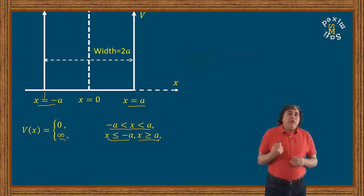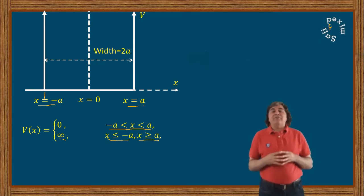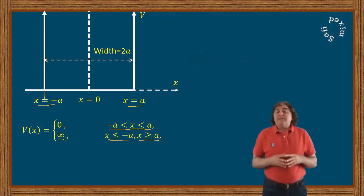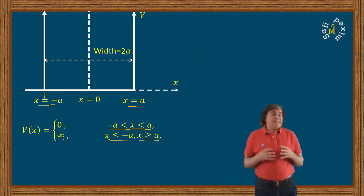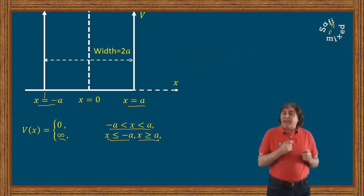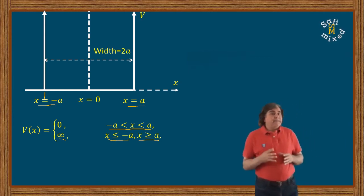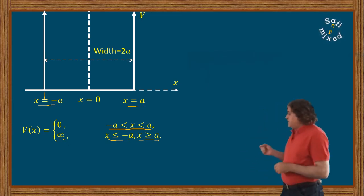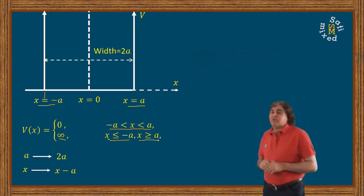One way to obtain the wave function for this potential is to solve the Schrödinger wave equation, exactly as we did for the standard infinite potential well. However, there is another easier way: we can obtain the wave function for the symmetric infinite potential well from the wave function of the standard potential well by setting a goes to 2a and x goes to x minus a in the wave function of the standard potential well.